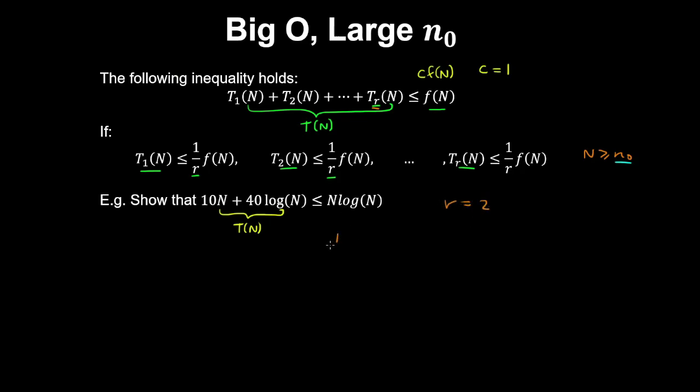So we divide the right hand side by 2, so we have 1/2 N log N. And then check these inequalities individually for each term. So starting with 10N, we'll check if it satisfies this inequality, and we'll do the same thing with 40 log N, so that's less than or equal to 1/2 N log N.